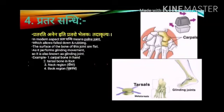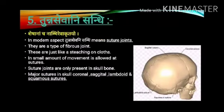Prathara Sandhi: In the modern aspect, Prathara Sandhi means plane joint, which allows gliding and rubbing movement. The surface of the bones of these joints are flat as it performs gliding movement, so it is also known as gliding joint. It is present in the carpal bones in the hand, tarsal bones in the foot, and neck and back region i.e. Griva and Krusta.